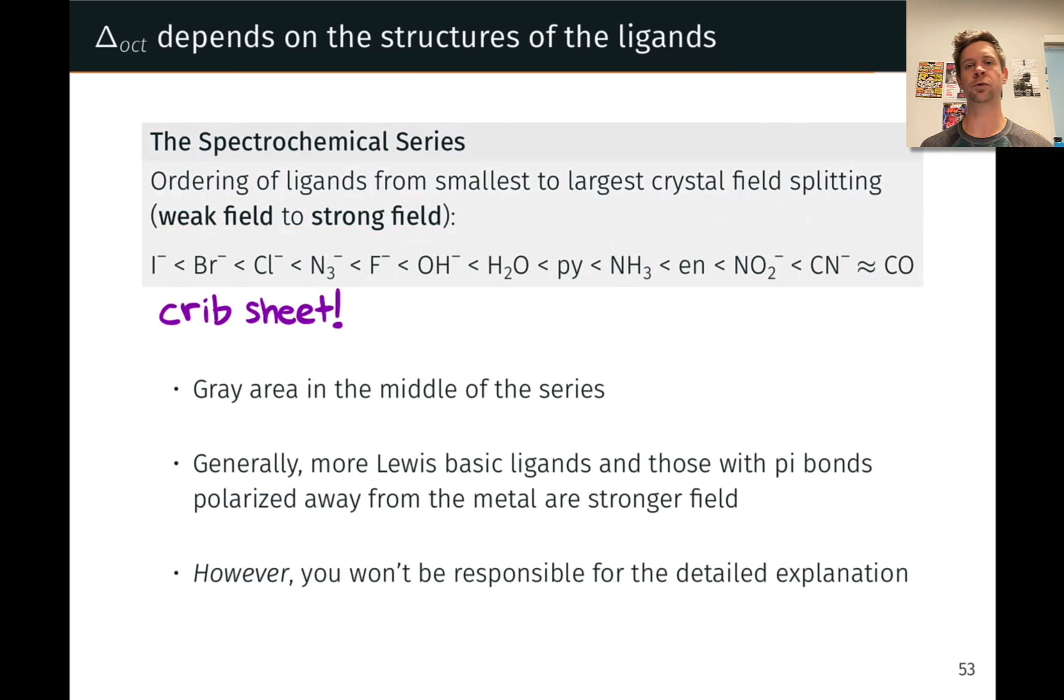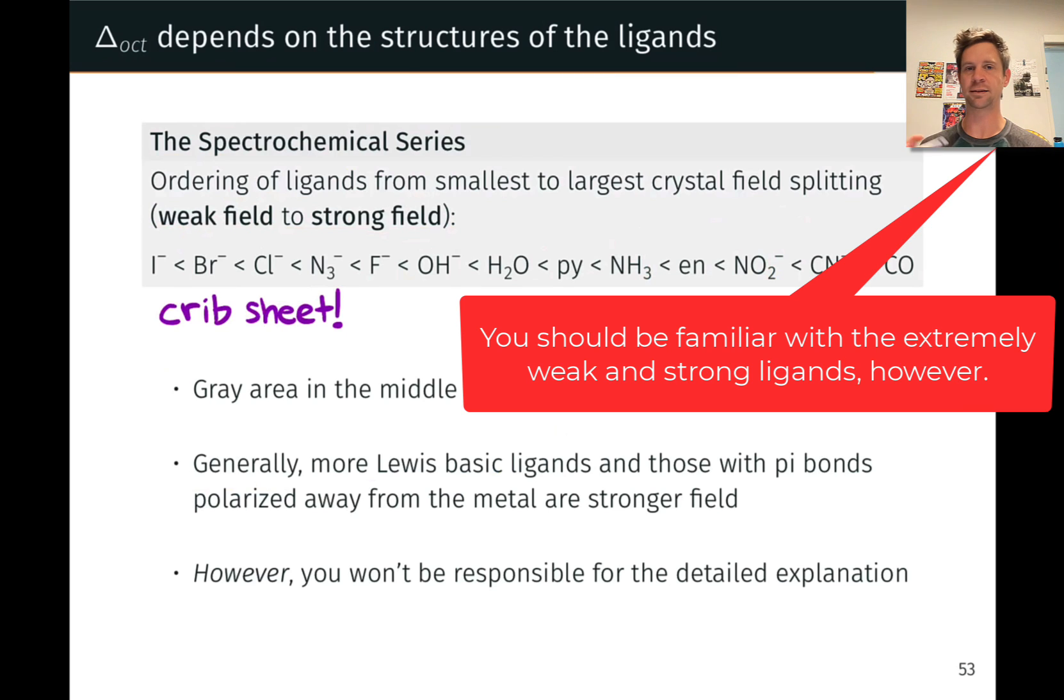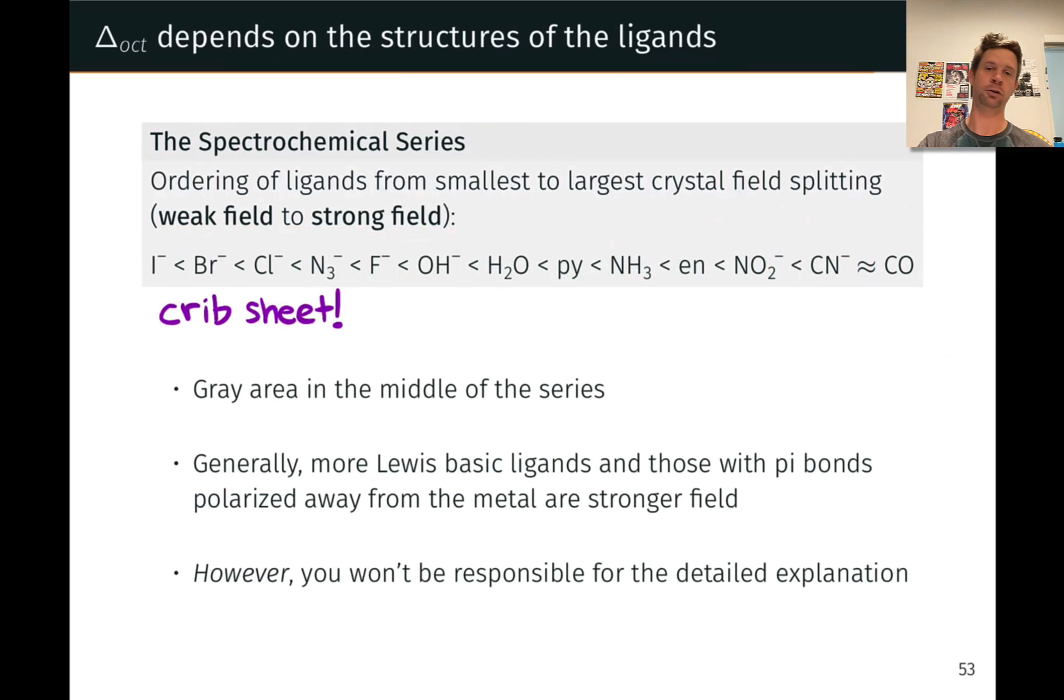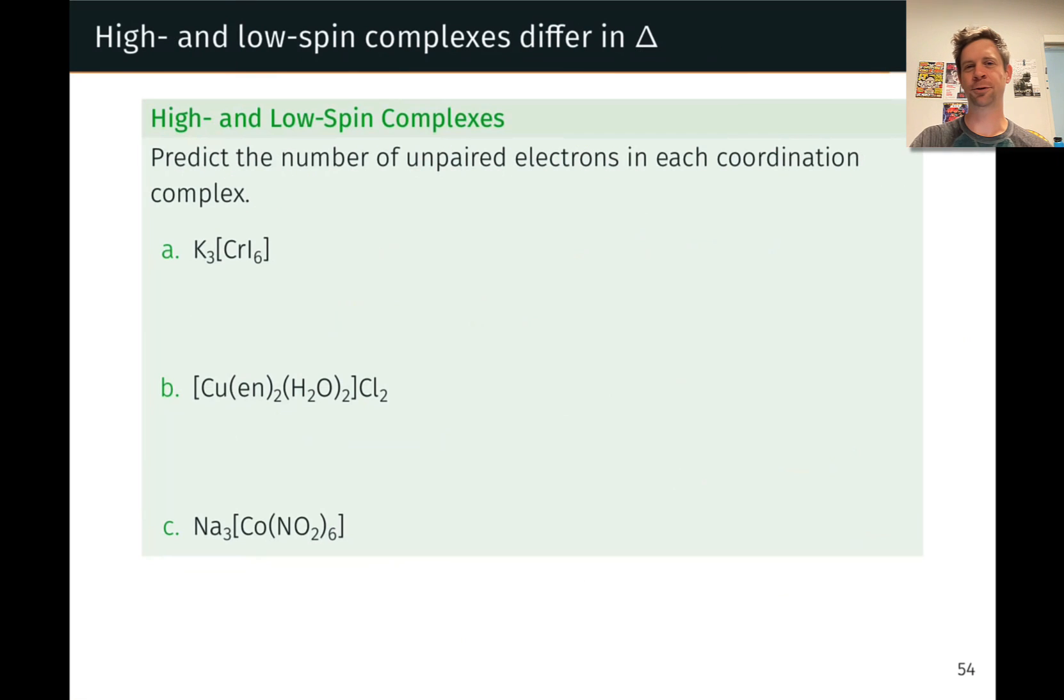And so just to sum up, you won't be responsible for the detailed explanation here, and I encourage you to put the spectrochemical series on your crib sheet just so you have it handy. It's something you are going to apply, but in a comparative sense primarily, looking at two different complexes and distinguishing between, for example, which one is likely to give a high-spin complex versus a low-spin complex with the same identity of the metal center in both complexes. We're going to put the spectrochemical series into practice by predicting the number of unpaired electrons in each coordination complex, and I just have to note here that finding the number of unpaired electrons is very important for magnetic properties.